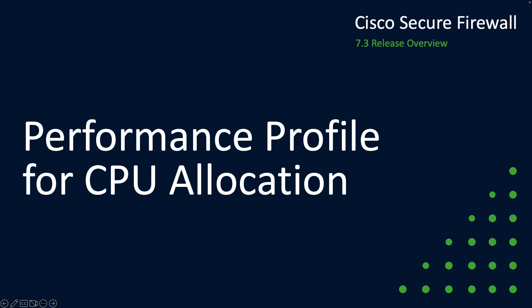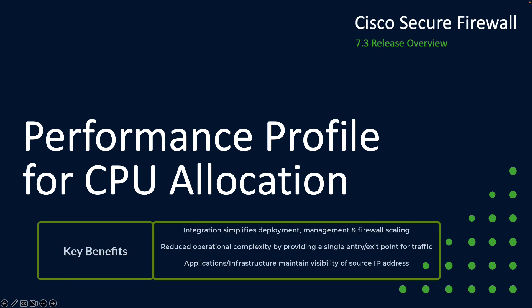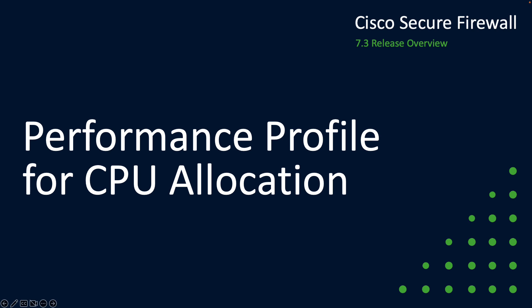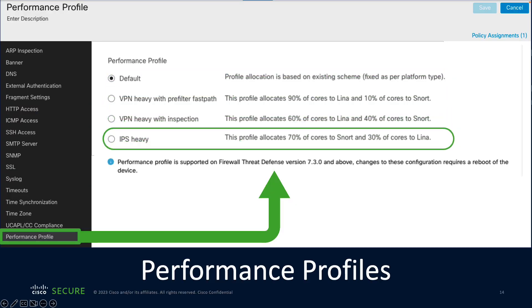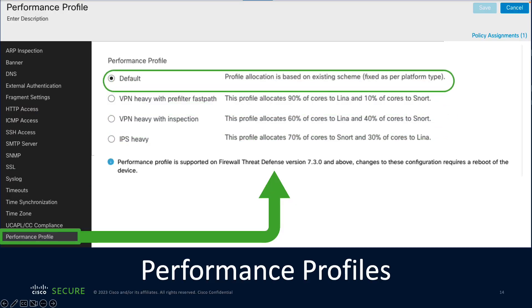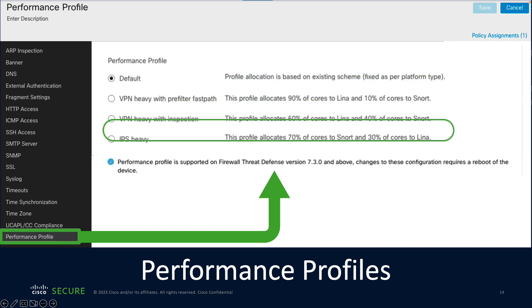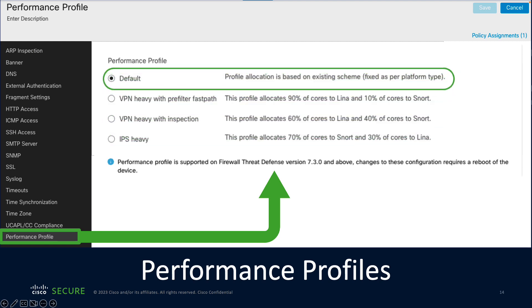Next, we're going to talk about performance profiles. Up until now, CPU cores and memory allocation have been fixed by the Cisco Secure Firewall platform type, based on performance testing. This can lead to scenarios where resources are reserved for features that may not be used. For example, if a firewall is primarily being used for VPN connections, then resources allocated for advanced inspections can go unused. Similarly, where intrusion prevention is the main use case, resources allocated for encryption or decryption may also go unused.